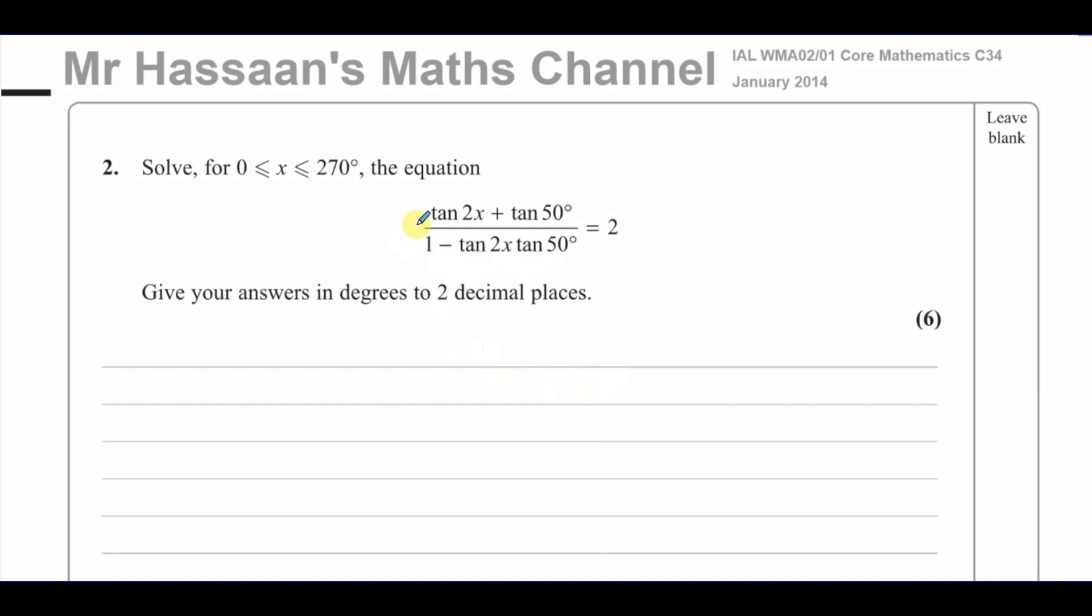So here we've got the form that we see here. We were to solve this equation, giving the answer in degrees to two decimal places. It looks like it's something that's quite complicated to solve the way it looks.